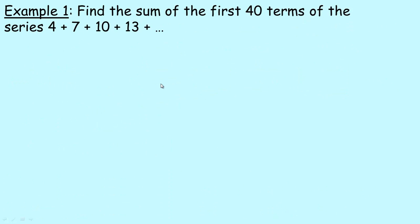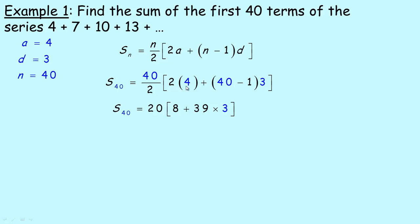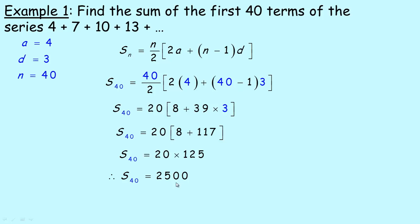We're going to use this formula to find the sum of the first 40 terms of 4 + 7 + 10 + ... The first term a is 4, we're adding 3 each time so the common difference d is 3, and n is 40. Writing out the series sum formula and filling in all values: S_40 = 40/2 × (2(4) + (40−1)(3)). That gives 20 × (8 + 39×3) = 20 × (8 + 117) = 20 × 125. So S_40 works out to 2,500.